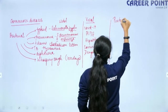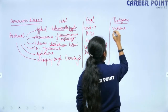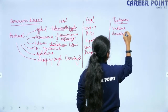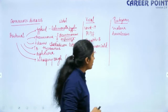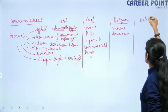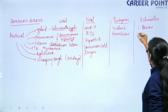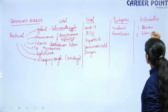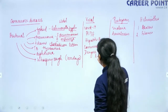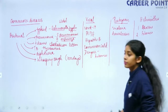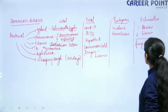Protozoan diseases include malaria and amoebiasis. Amoebiasis is caused by Entamoeba histolytica, and malaria is caused by Plasmodium species. Helminthic diseases include ascariasis and elephantiasis (filariasis). The last category is fungal infection — ringworm.